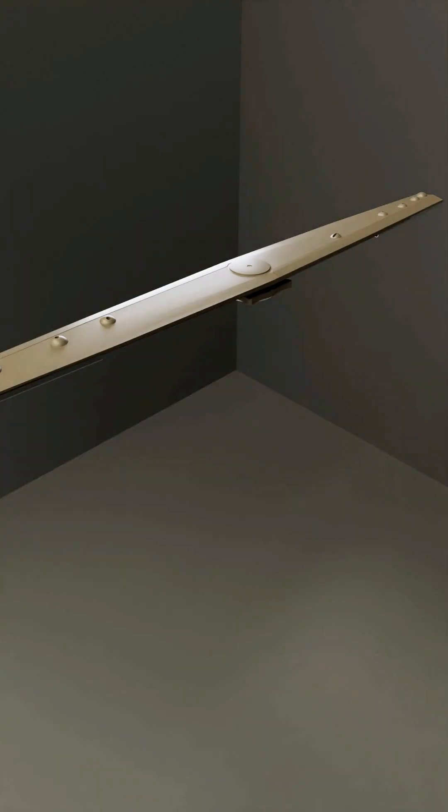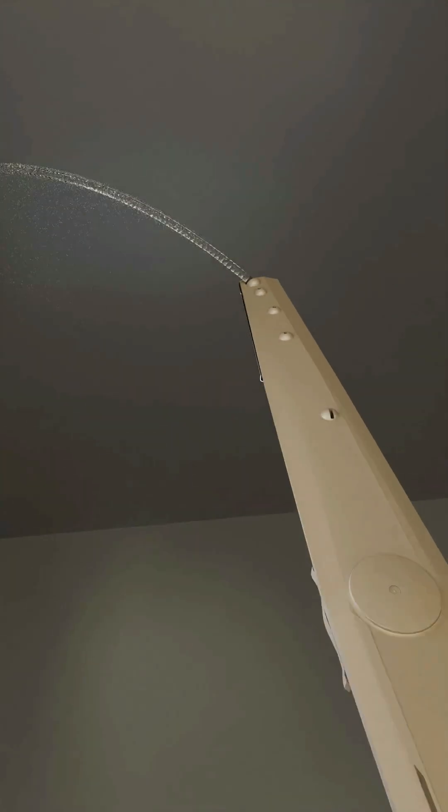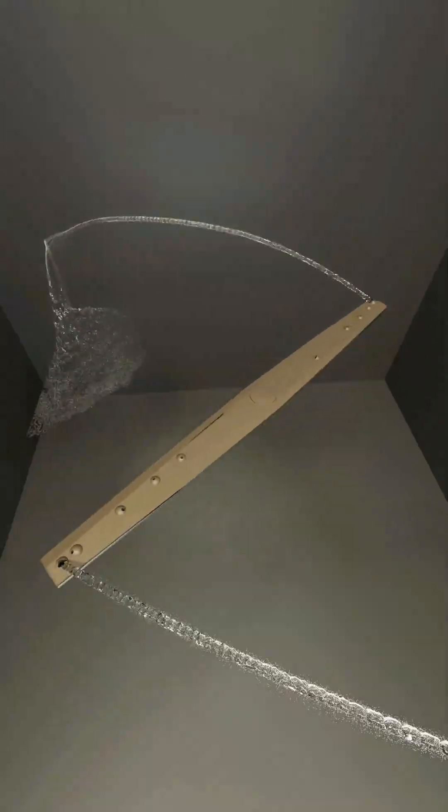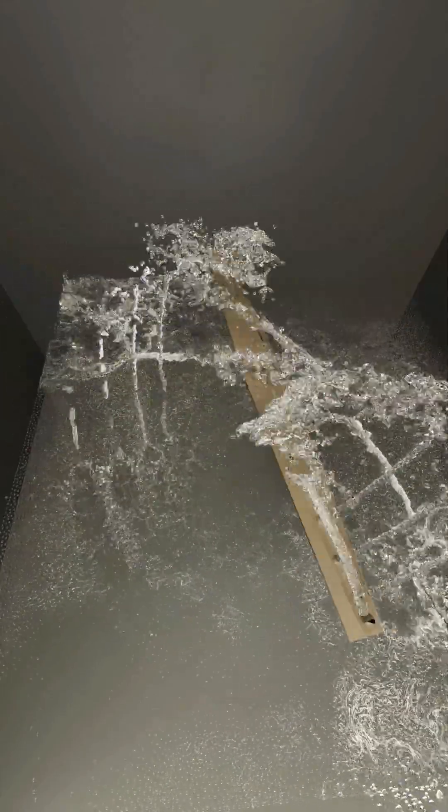Water ejects forcefully from one side, then immediately from the opposite jet, causing the arm to rotate. As the arm spins, additional jets activate, maintaining consistent rotation and ensuring comprehensive cleaning coverage throughout the cycle.